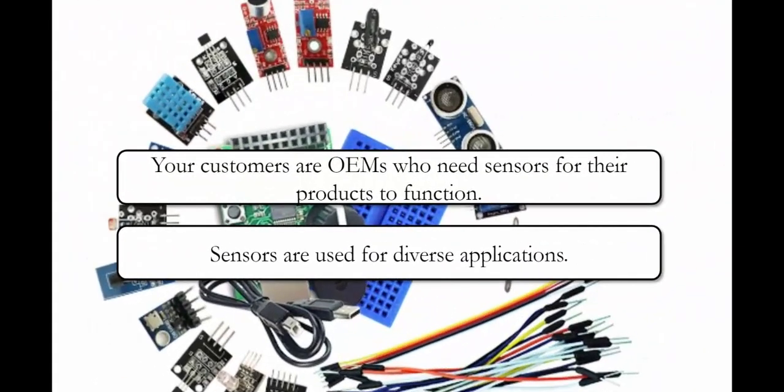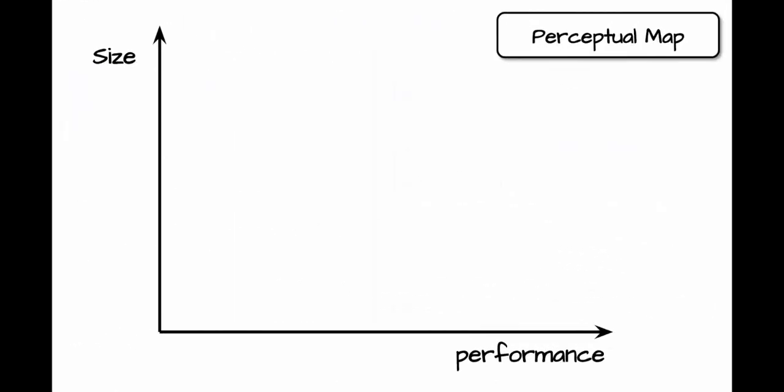Your customers are original equipment manufacturers who need sensors for their products to function. Sensors are used for diverse applications, including cars, elevators, mobile phones, and tablets. The perceptual map is a tool companies use to track the position of their products and those of their competitors. In the case of sensors, positioning on the perceptual map is determined by size and performance — size meaning how small a sensor can you produce, and performance meaning speed, or how fast your microprocessor is.